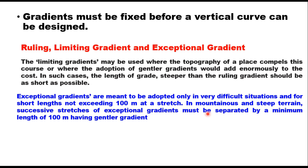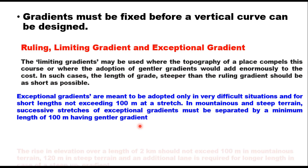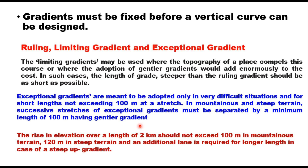In mountainous and steep terrain, successive stretches of exceptional gradient must be separated by a minimum length of 100m having gentler gradient. IRC 73 suggests that the rise in elevation over a length of 2 km should not exceed 100m in mountainous terrain, 120m in steep terrain, and an additional lane is required for longer lengths in case of steep up gradient.